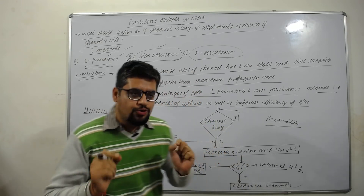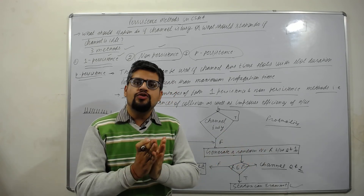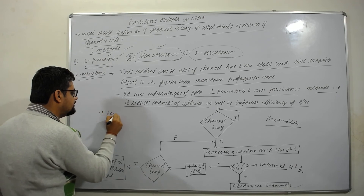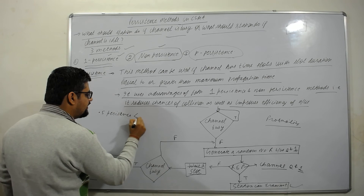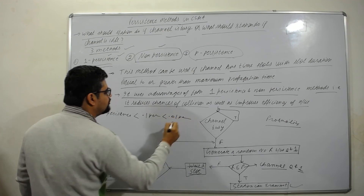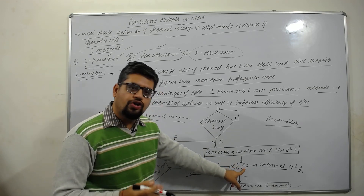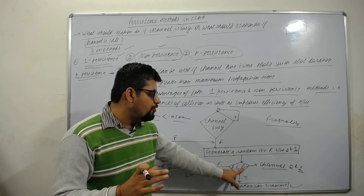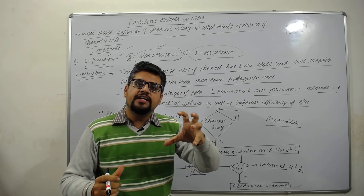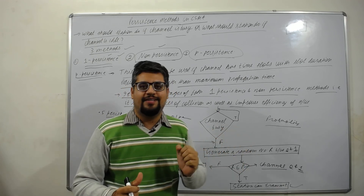The smaller the value of p, the higher the throughput will be, because chances of collision will be very small. For example, with 0.5 persistence (p=0.5), 0.1 persistence (p=0.1), and 0.01 persistence (p=0.01), as p gets smaller, successful transmissions increase. As p is small, the random number will less often be less than or equal to p, so we will transmit less often, reducing collision chances and improving throughput, but we also reduce channel utilization.